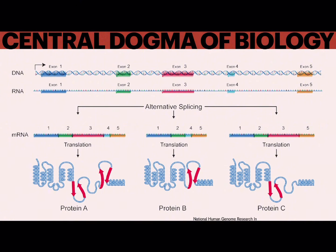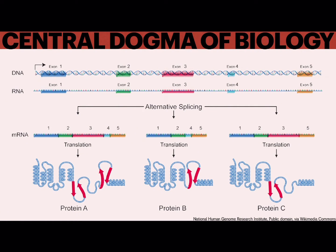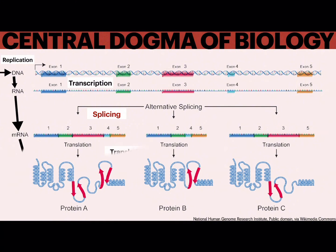Splicing is the process in which a gene's introns get excised or removed, leaving just the exons. Once processed, ribosomes can then use them to construct their corresponding proteins. Each of the three steps are associated with each of the three products — DNA, RNA, and protein, respectively. DNA is replicated, transcribed into RNA, spliced to create messenger RNA, which then gets translated into proteins. This is the central dogma of biology.